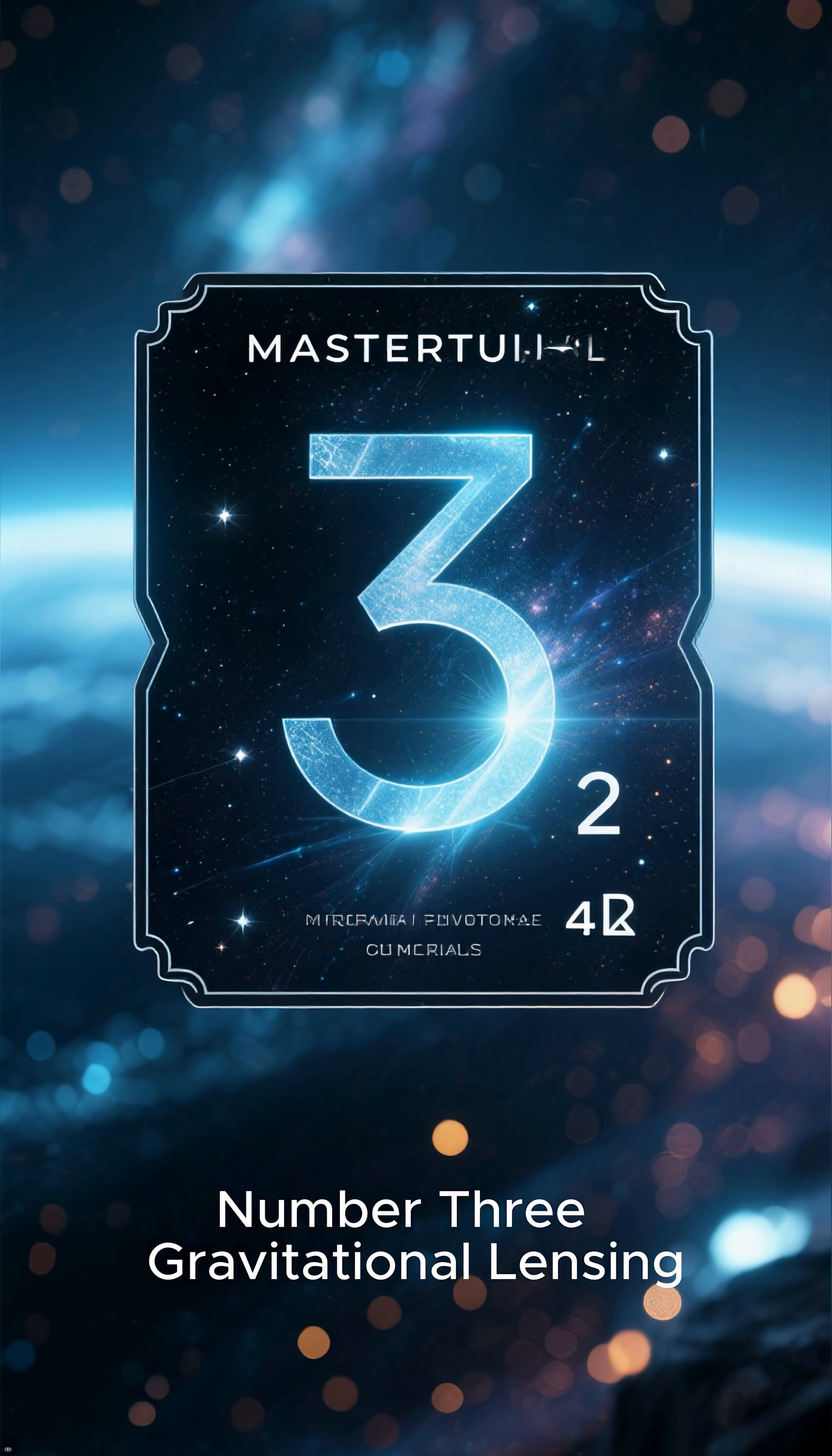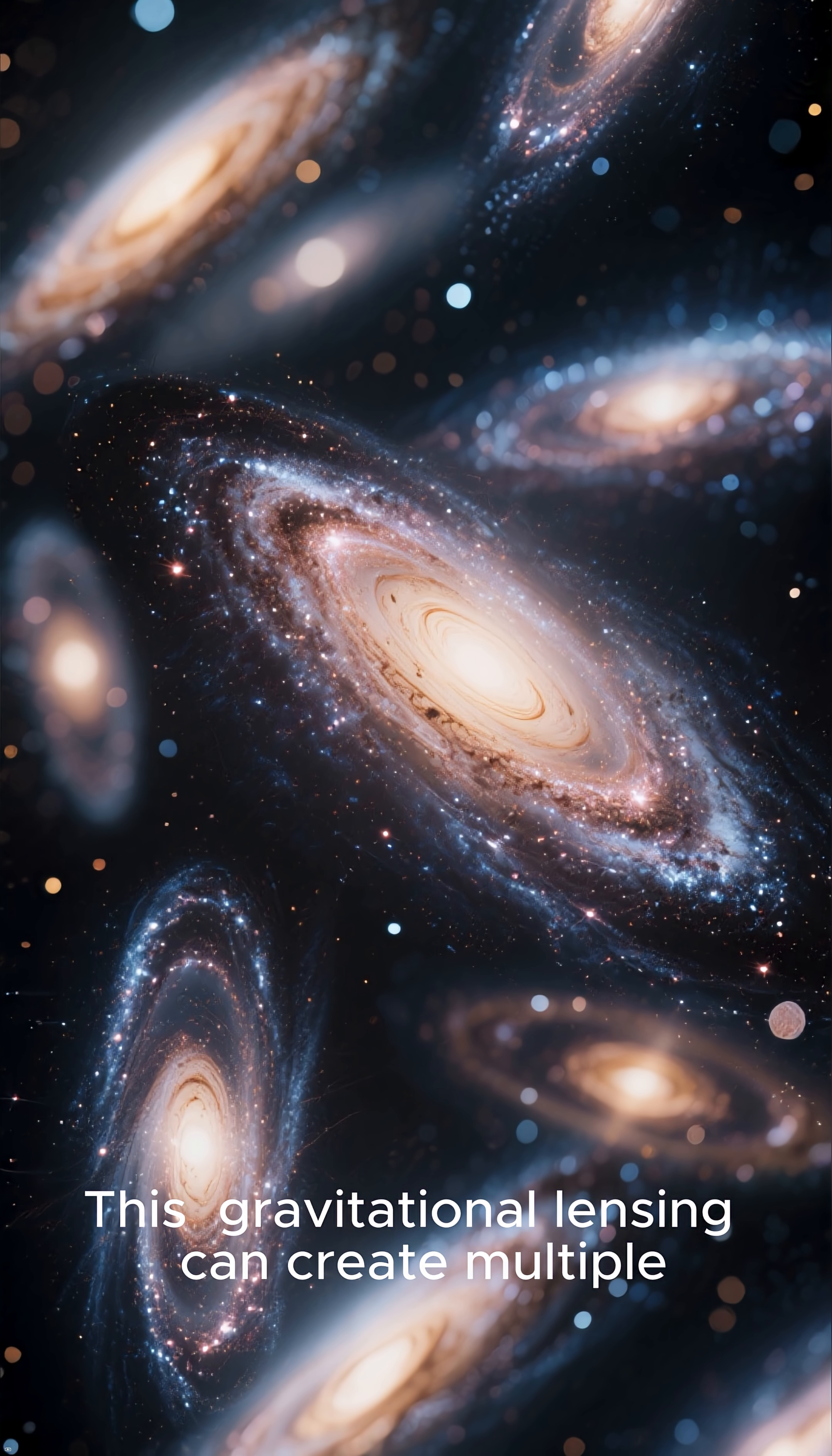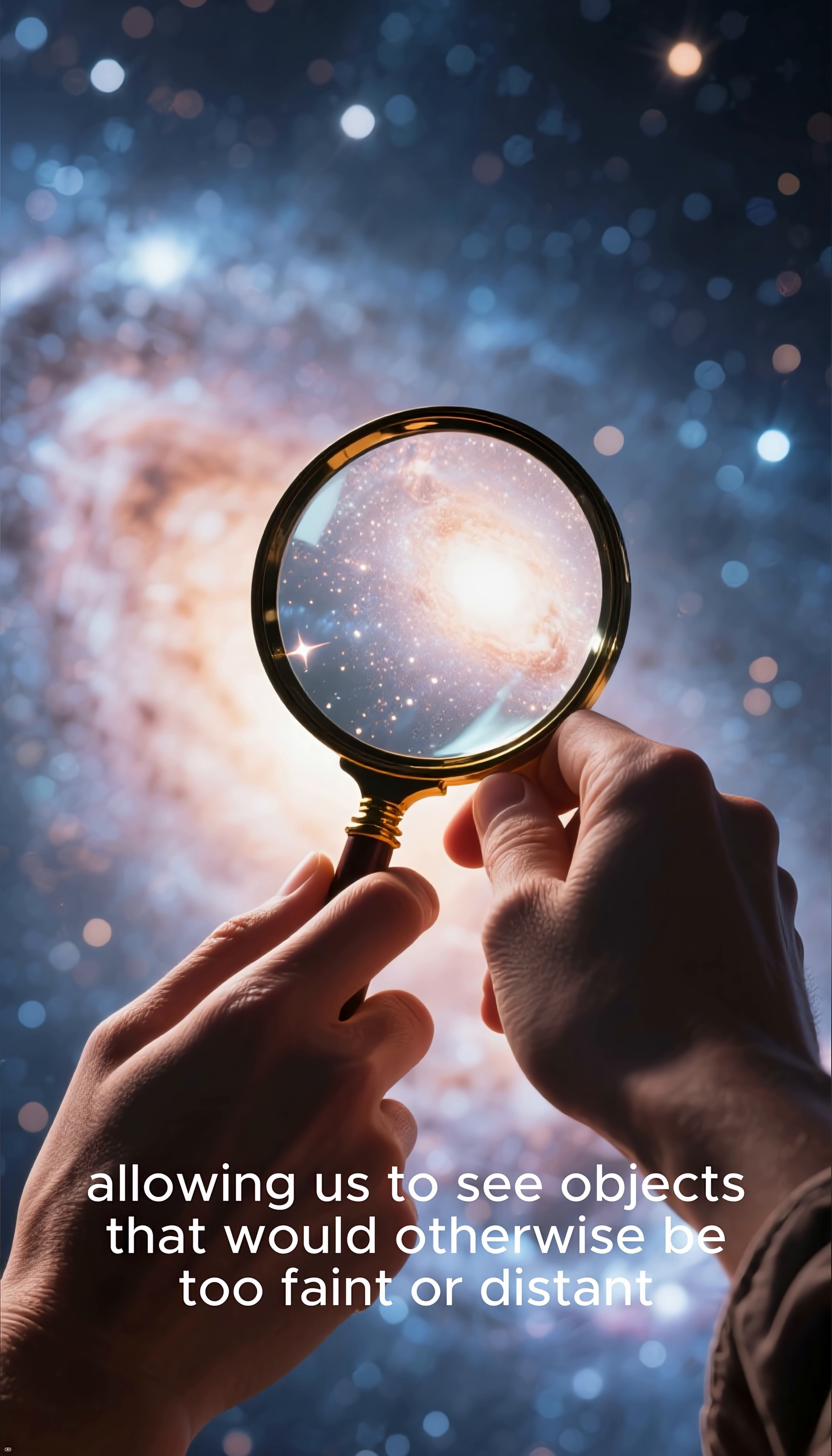Number three: Gravitational lensing. When light from a distant galaxy passes near a massive object, like a galaxy cluster, its path is bent, just as light is bent by a glass lens. This gravitational lensing can create multiple distorted images of the background galaxy or even stretch it into long, luminous arcs. It acts as a cosmic magnifying glass, allowing us to see objects that would otherwise be too faint or distant.